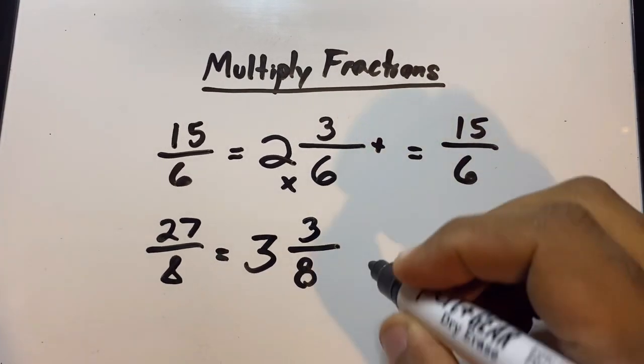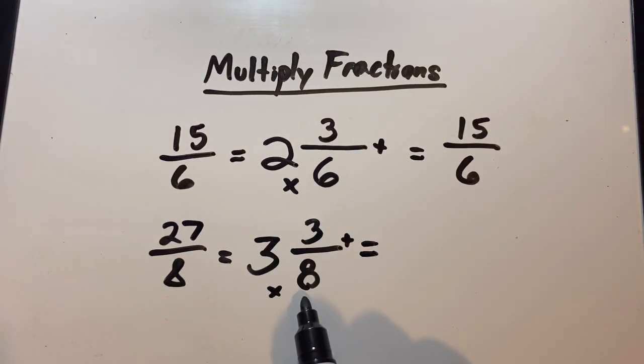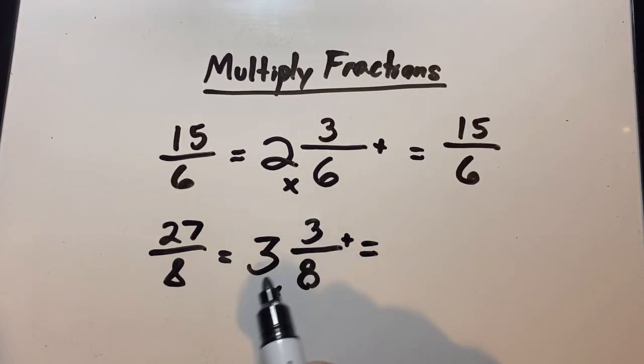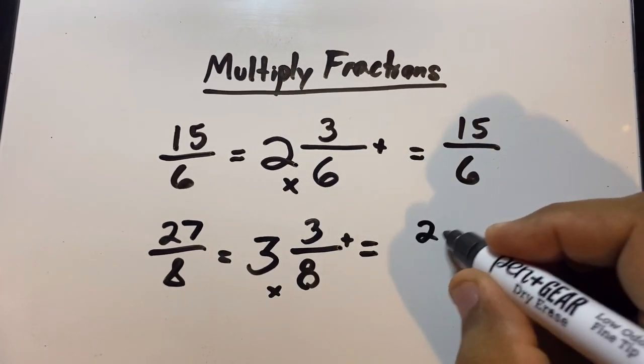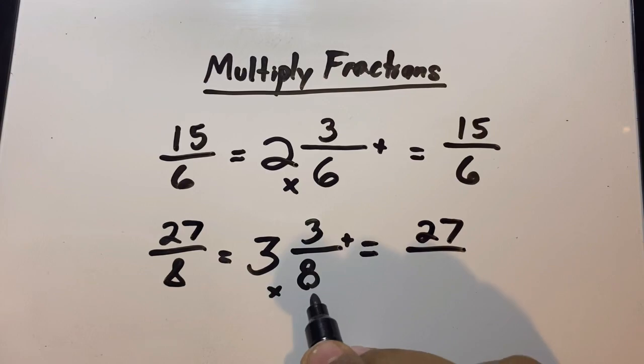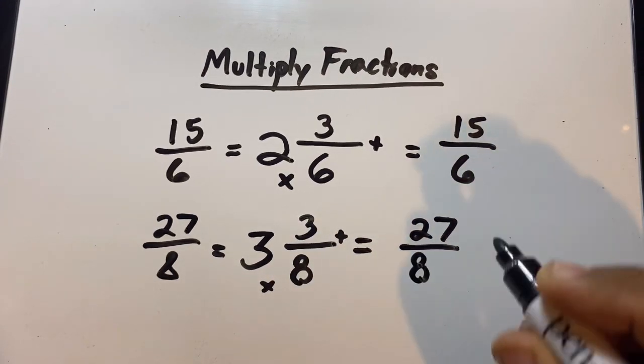Very easy. And then to convert it, well, you just follow the formula: whole number times denominator and then you add the numerator. So 3 times 8 is 24, plus 3 is 27. The denominator, which is the bottom number, doesn't change. So there you go, see, same answers.